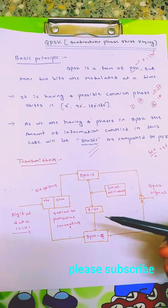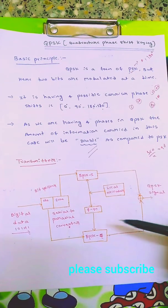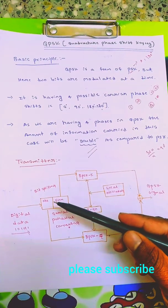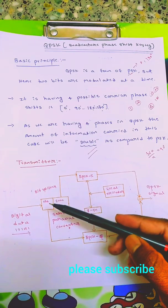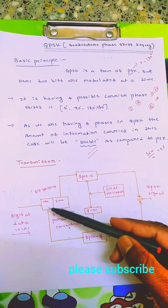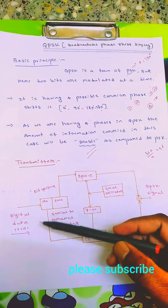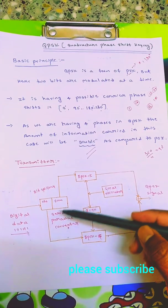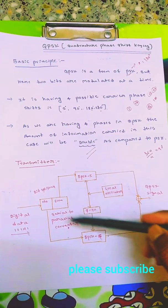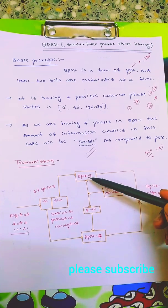Now coming to transmitter. The transmitter block diagram consists of a demultiplexer basically, which demultiplexes odd and even components of serial data. That serial data is converted to parallel data.